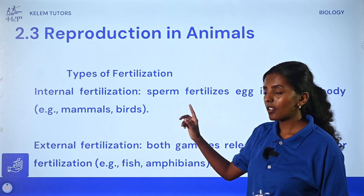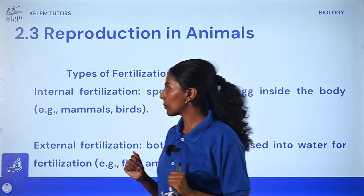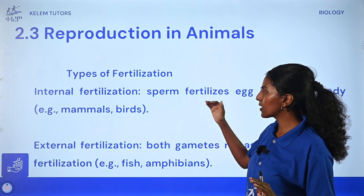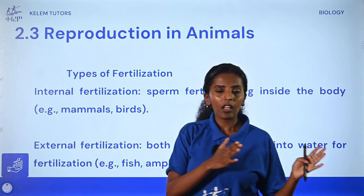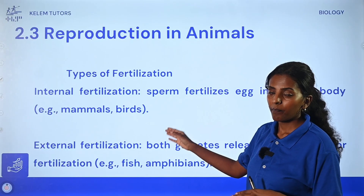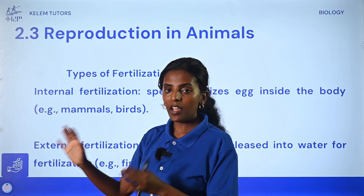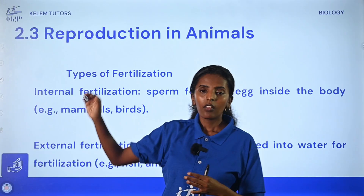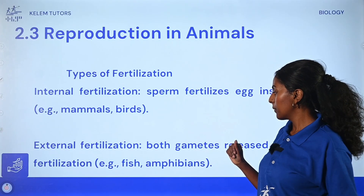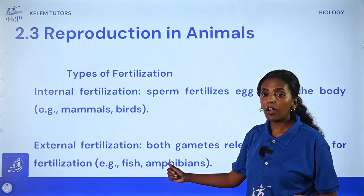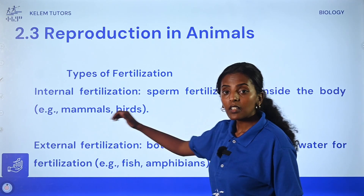Not all fertilization is the same type — there are two types: internal and external. Internal fertilization happens inside the female body, and mostly occurs in mammals and birds. External fertilization is different — the female releases eggs outside of her body, and then the male comes and fertilizes them. This is common in some fishes and amphibians, such as frogs.